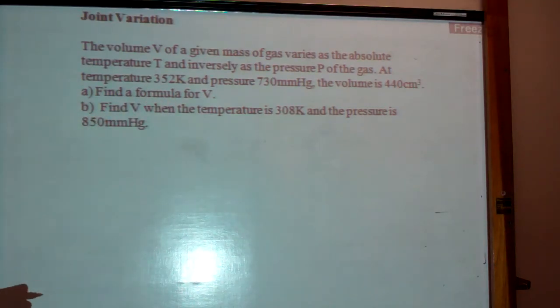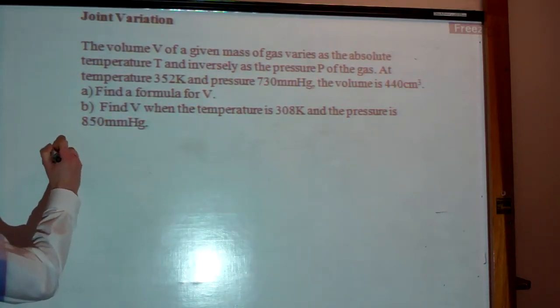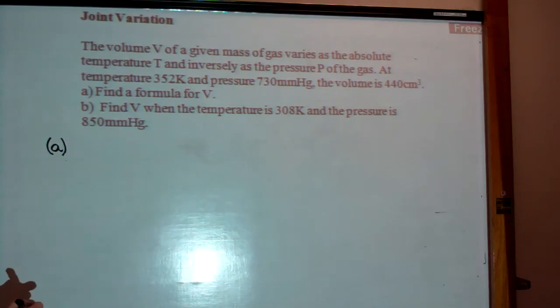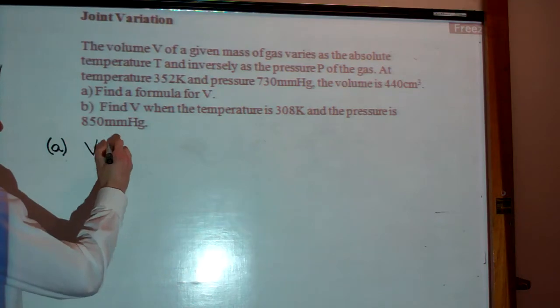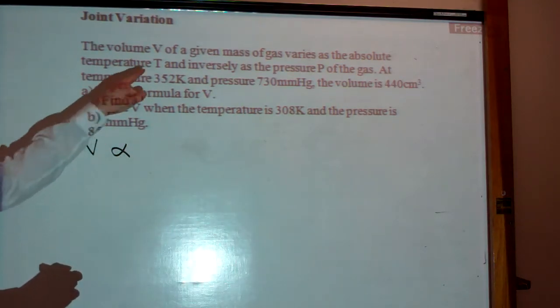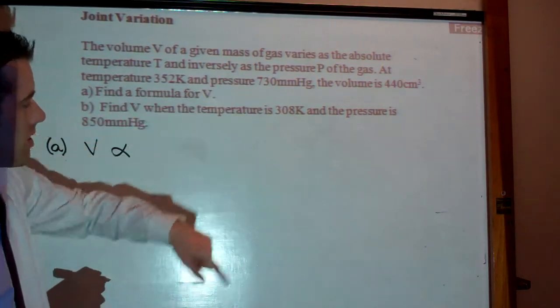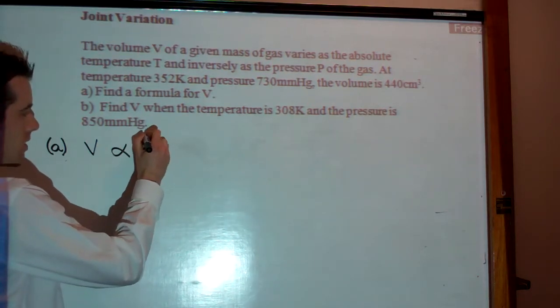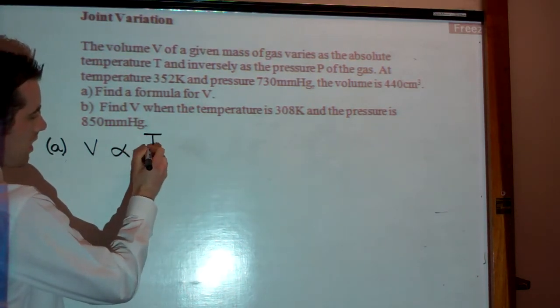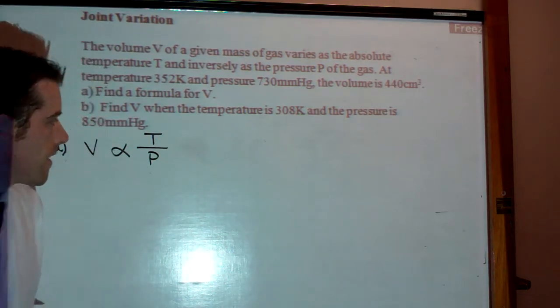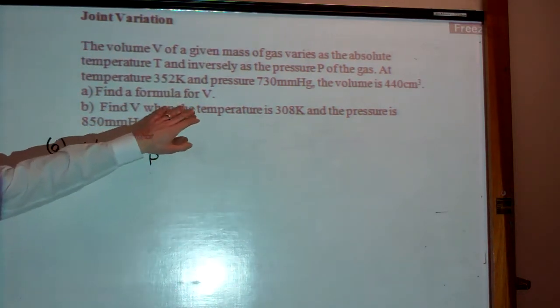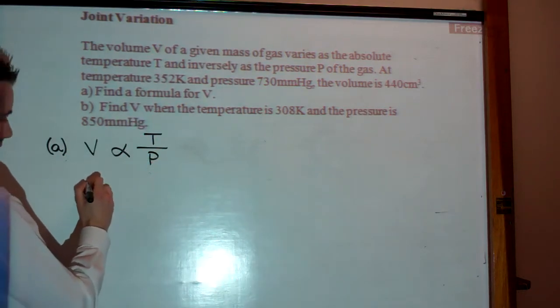So, find a formula for V. First thing we have to do is write down our variation statement, so it says the volume V of a mass of gas varies as the absolute temperature T and inversely as the pressure P. So that means it varies directly as the temperature T and inversely as P. Alright, so that's our variation statement. If we want to find a formula for V, then we have to take into account this.